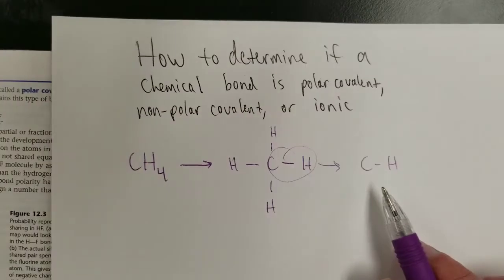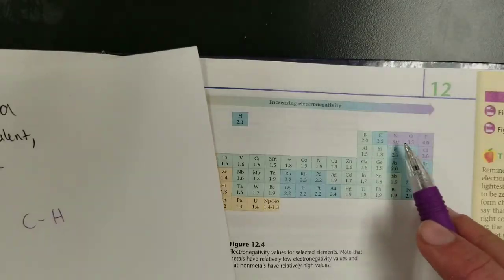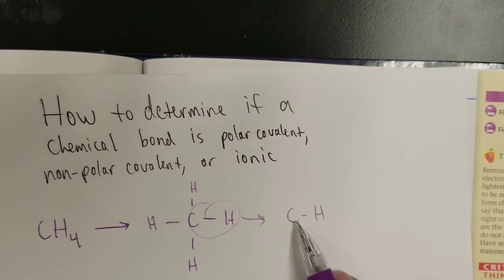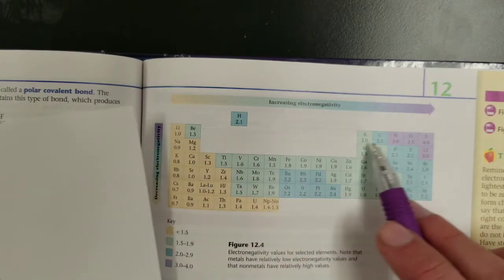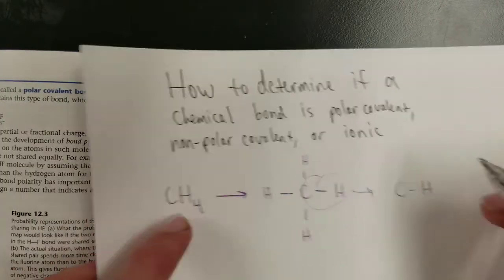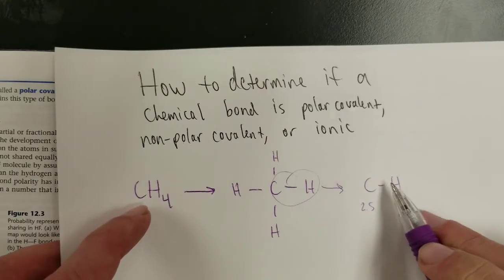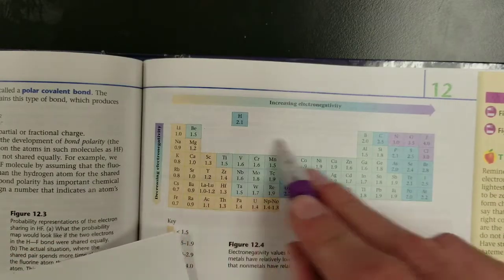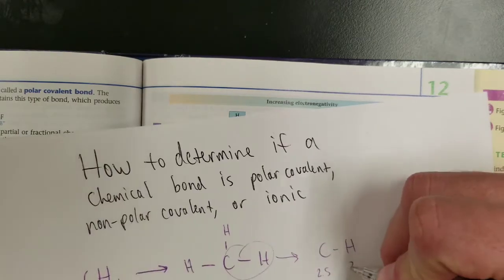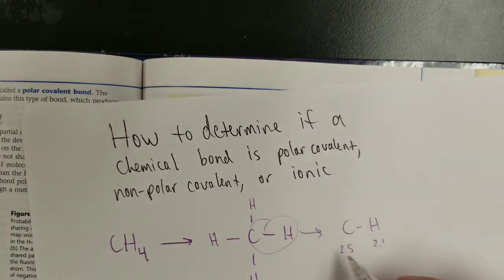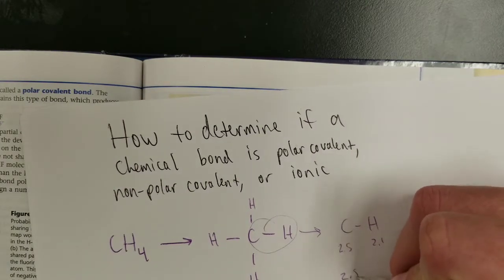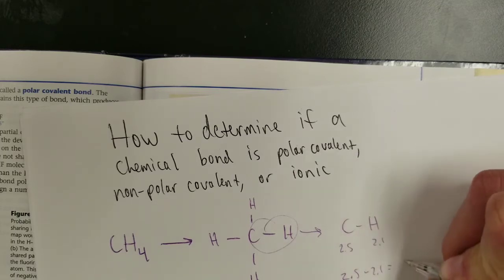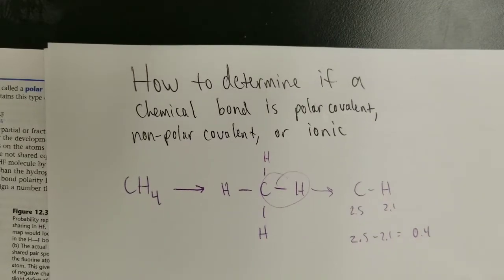So, looking at carbon, here's how you actually do it. I look at the value for carbon. Let's see how strongly carbon attracts the electron. It is electronegativity value of 2.5. Hydrogen has an electronegativity value of 2.1. So, what's the difference between their electronegativities? 2.5 minus 2.1 equals 0.4. What does that mean?